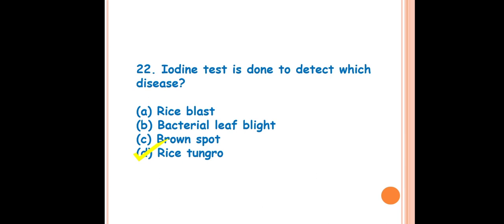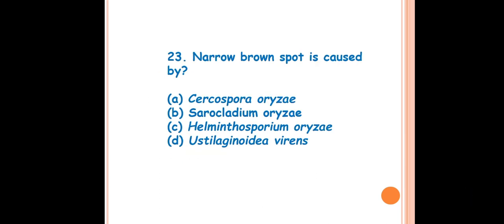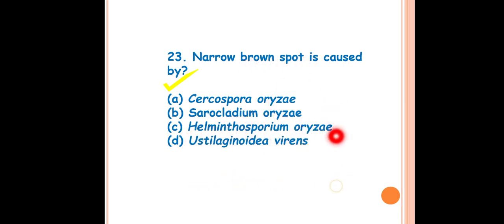Question 23: Narrow brown spot is caused by? The answer is A — Cercospora oryzae. Narrow brown spot is caused by Cercospora oryzae, whereas brown spot (only brown spot) is caused by Helminthosporium oryzae. Note that these two are different diseases.